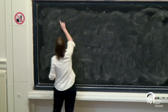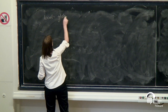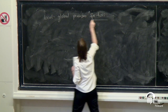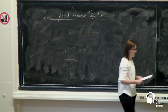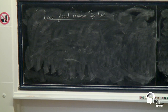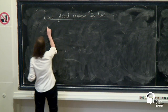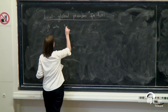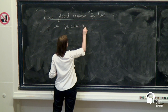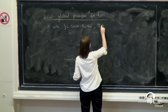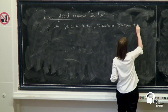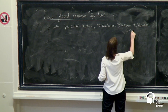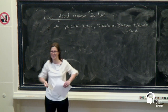My title today is Local-Global Principles for Tori — I'm going to skip the rest in writing it down. These are going to be tori over arithmetic surfaces, or arithmetic function fields as we call them. Let me not forget to say that this is joint work with Jean-Louis Colliot-Thélène, David Harbater, Danny Krashen, Hartmann, and Suresh. And how do you get this many co-authors? You write a big grant proposal, and that's how it works.